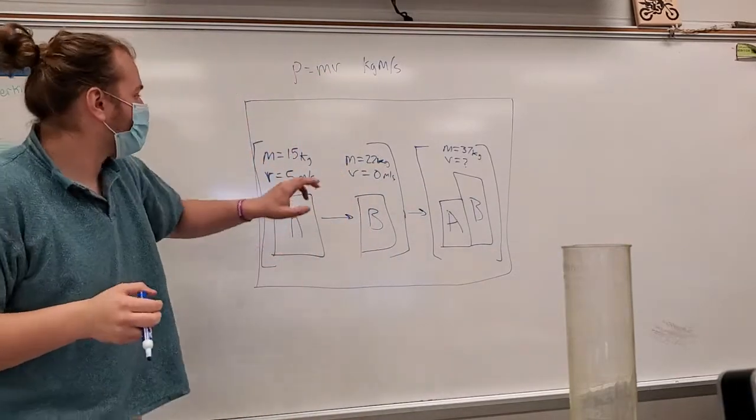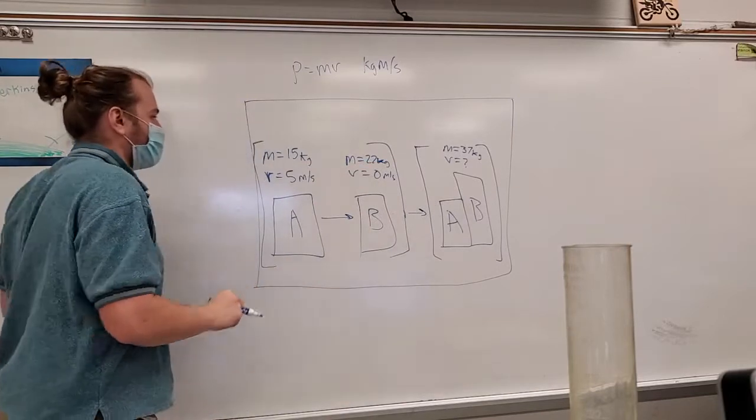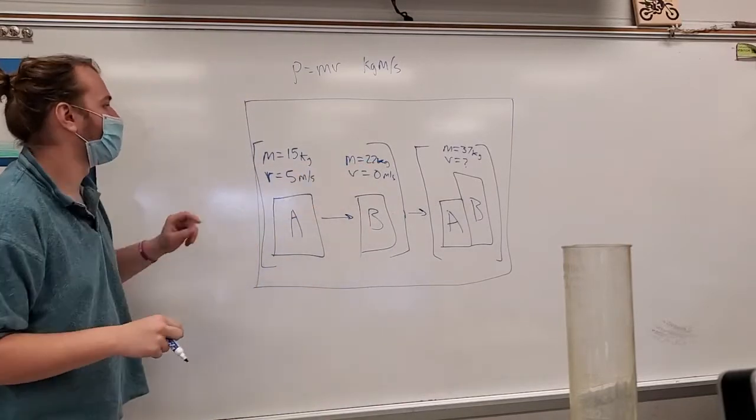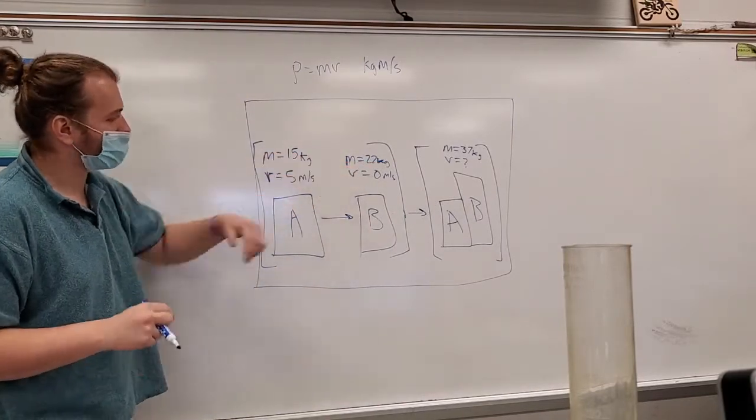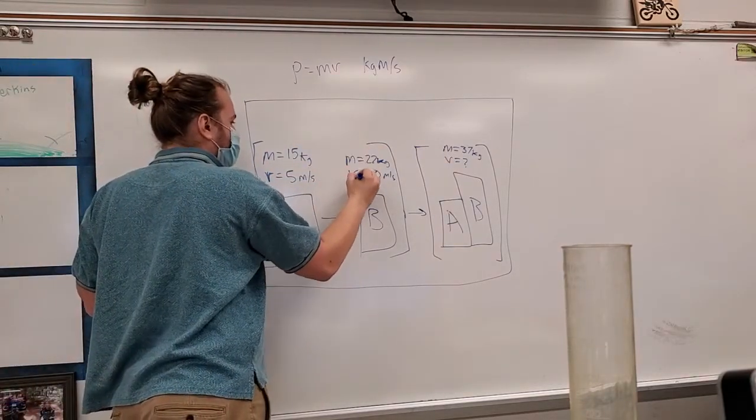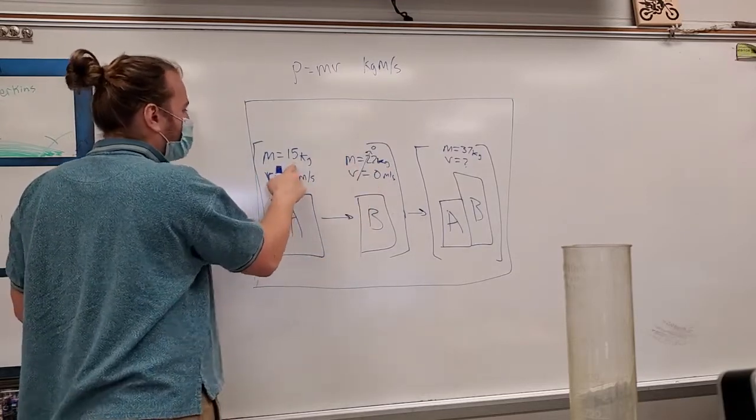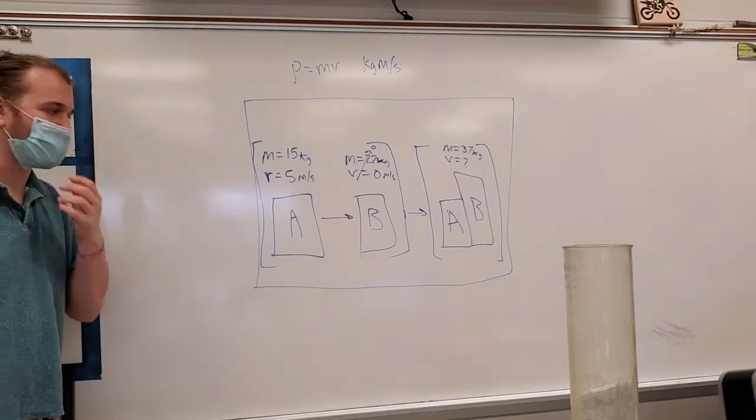So remember what I said before. Your initial momentum is going to equal your final momentum. So let's find the initial momentum of this. Well, immediately we see 22 times 0 is equal to 0. So we know that this is equal to 0. And now we just multiply 5 by 15, and we get 75.